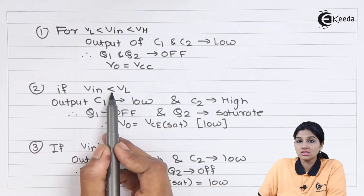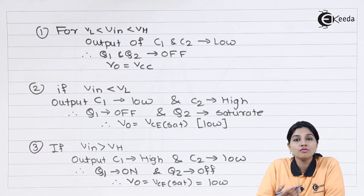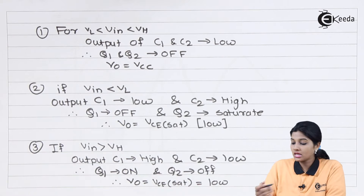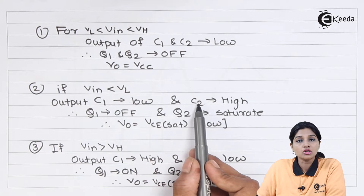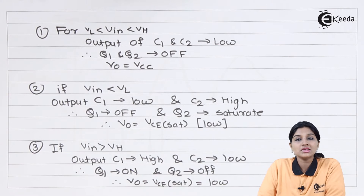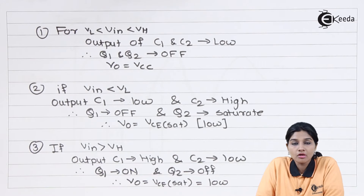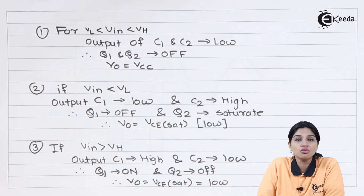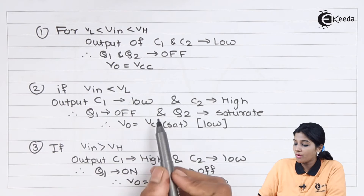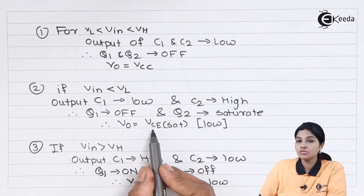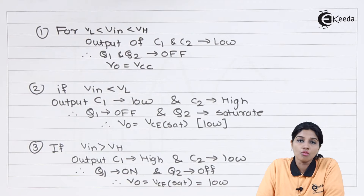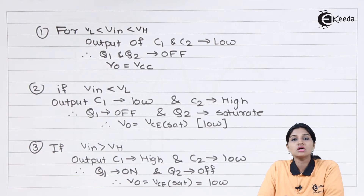In the second case, when V_in is less than VL — that means when the input signal is below the lower level of the window — the output of comparator 1 becomes low and the output of comparator 2 becomes high. As a result, transistor Q1 is in the off state whereas transistor Q2 is saturated, that means in the on state. Therefore the output becomes VCE_sat, which is a low voltage.